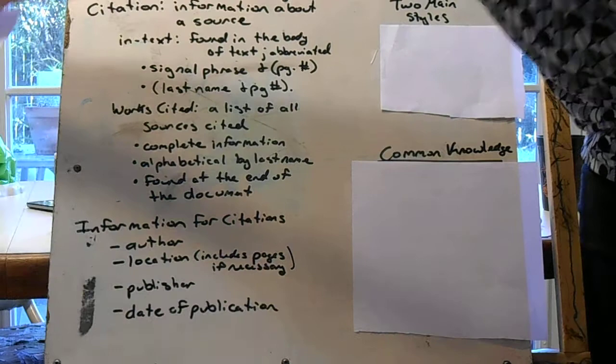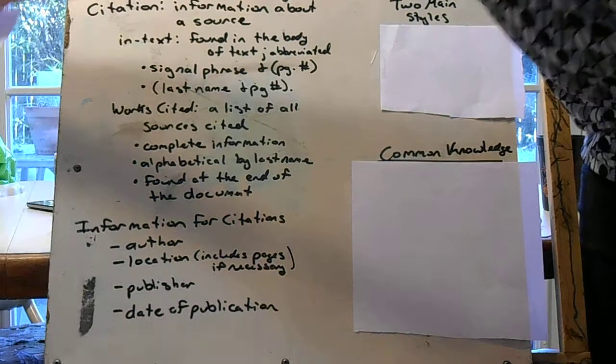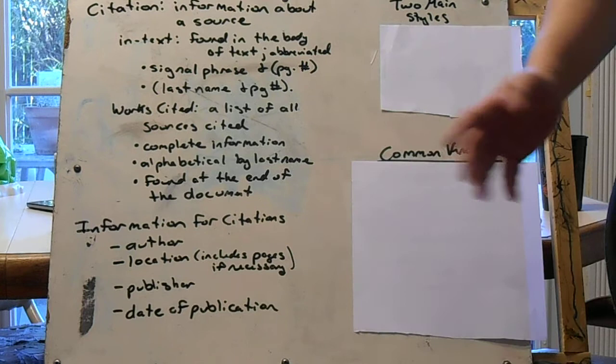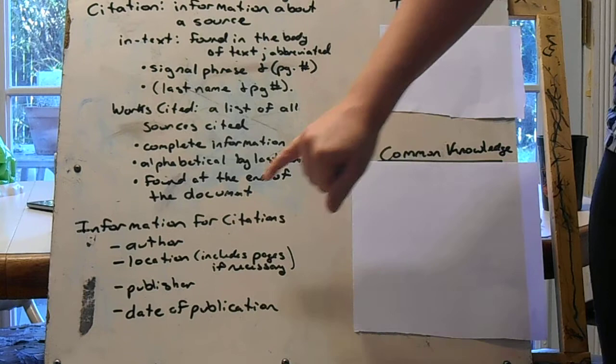All right, so what information do you need in your citations? So information for citations is basically everything about the source. The primary, but this is not a complete list, is we need to know who the source was, the author.